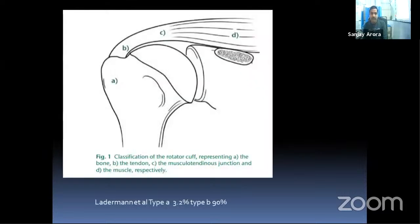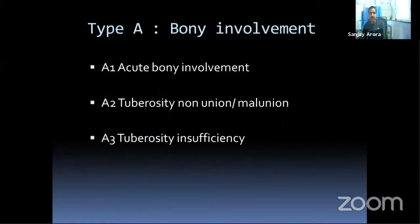Regarding classification, Letterman et al. classified rotator cuff injuries according to the level of injury: bony level, tendinous level, musculotendinous junction, or muscle level. At the bony level, acute involvement includes greater tuberosity non-union and malunion, leading to effective shortening of the muscle-tendon unit and rotator cuff dysfunction. Tuberosity insufficiency may be idiopathic or post-operative, such as from decomposition of biocomposite anchor material.